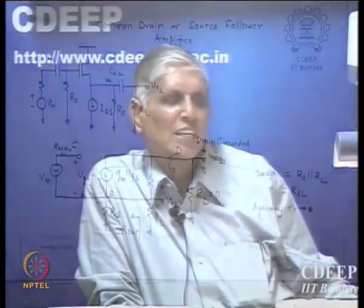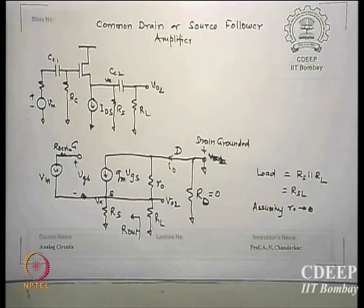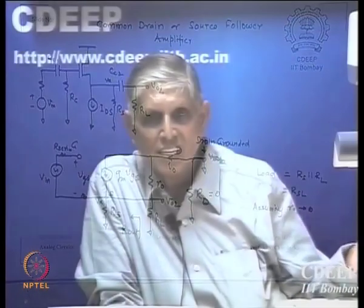One advantage of MOSFET over bipolar is that there is no connection between gate and source for DC current, because of the insulator. In bipolar, the base-emitter junction exists, so IB flows through both emitter and base. That is not the case in MOSFET, so it is much easier to evaluate — if there is a current common to two sides, there is a problem to solve.